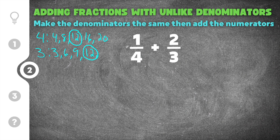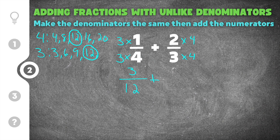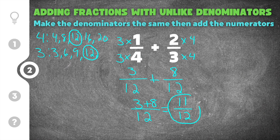We change both fractions into equivalent fractions with a denominator of 12. One fourth gets multiplied by 3: 1 times 3 is 3, and 4 times 3 is 12, giving 3 twelfths. Two thirds gets multiplied by 4: 2 times 4 is 8, and 3 times 4 is 12, giving 8 twelfths. Now we add the numerators: 3 plus 8 is 11, keeping the denominator as 12. Our final solution is eleven twelfths.